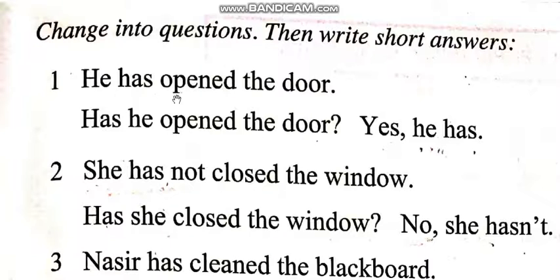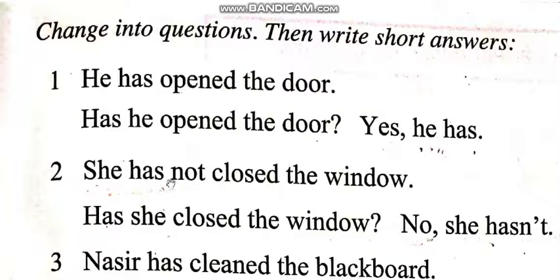He has opened the door — us ne derwaza kholla. Has he opened the door? Kia us ne derwaza kholla hai? Yes, he has — ji us ne open kiya hai. She has not closed the window. Has she closed the window? No, she hasn't.